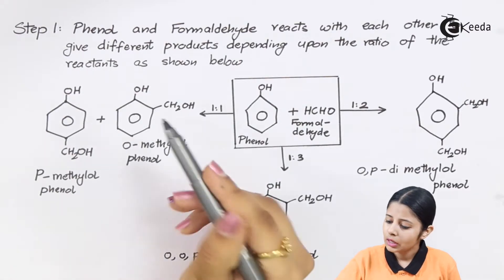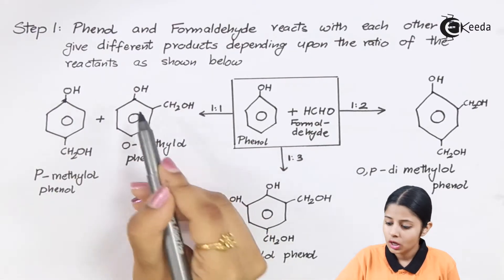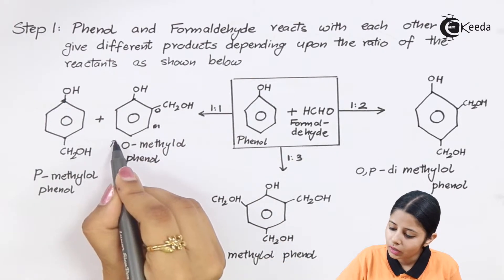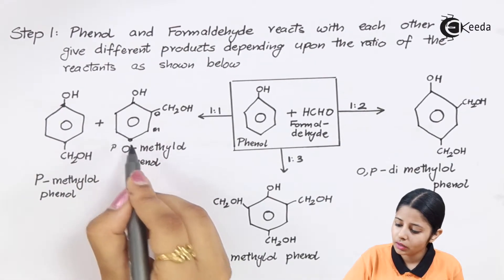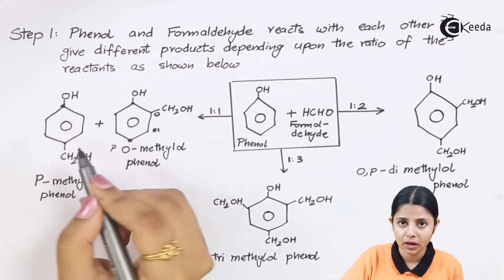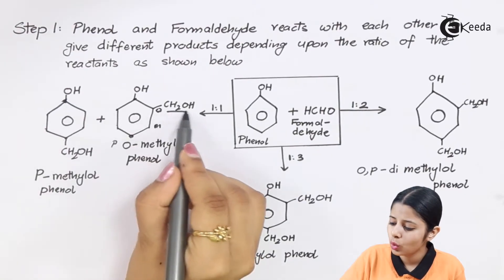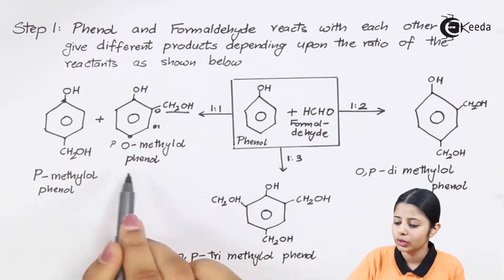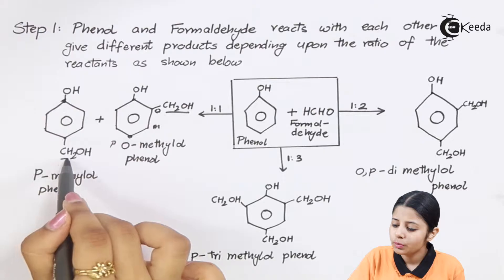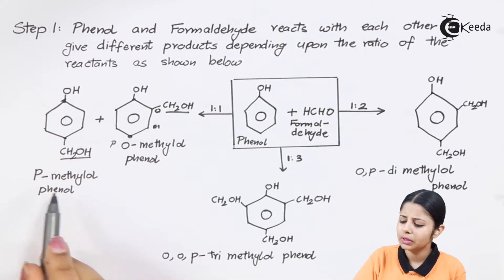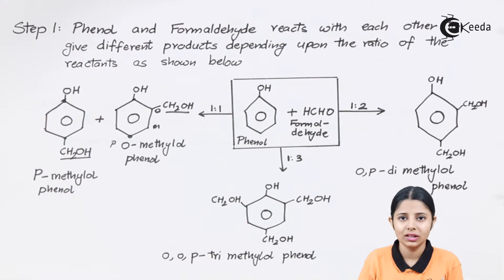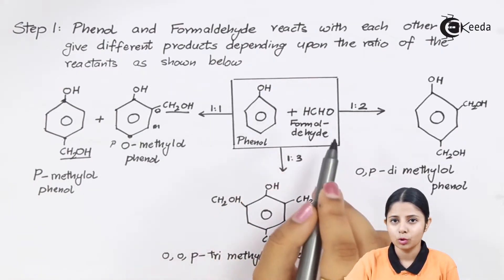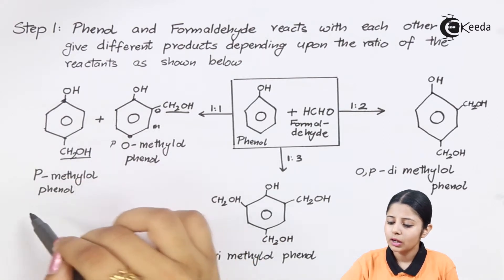Looking at the benzene ring of phenol, the position beside the OH is ortho, next is meta, and opposite is para. The functional group CH2OH is attached at the ortho position in O-methylol phenol, and at the para position in P-methylol phenol — we designate these as O and P respectively. So when phenol and formaldehyde are in a 1:1 proportion, it forms P-methylol phenol and O-methylol phenol.